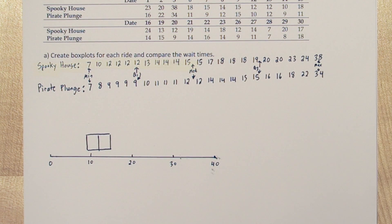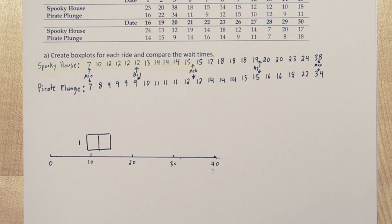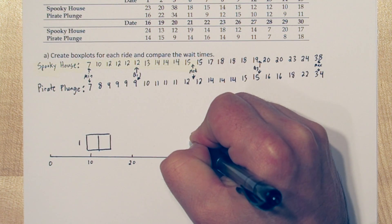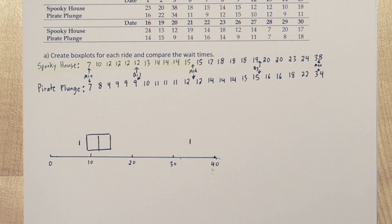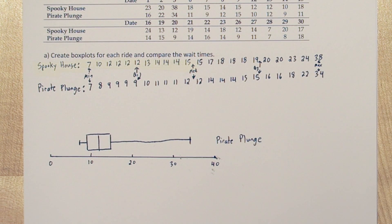Now connect those lines. Next let's graph the minimum and maximum. The minimum waiting time was 7 minutes, and we're going to draw a small vertical line. And the maximum wait time was 34 minutes. We'll draw another small vertical line. Now we'll connect those vertical lines to the box with whiskers. There's our box and whisker plot for Pirate Plunge.